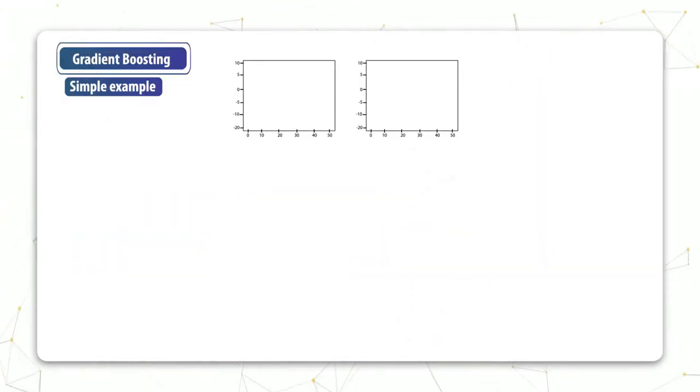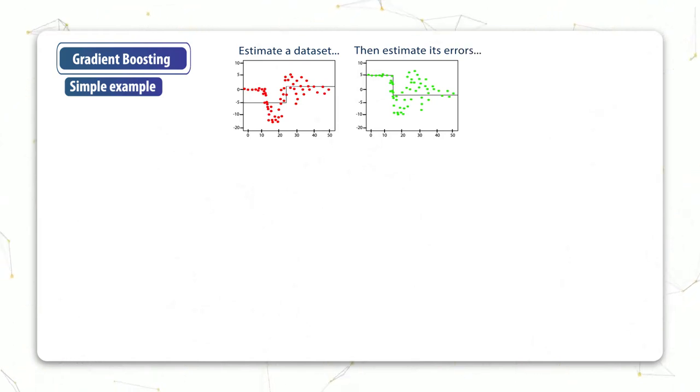So as usual let's start off with a very simple example. We have on the left hand side this dataset with a fairly complicated distribution and a fairly simple estimator for that distribution. The estimator is just a one layer decision tree. So it partitions the space into two parts, estimating a constant value on the left and a constant value on the right.